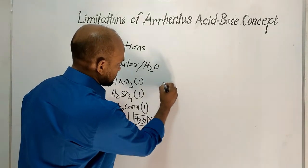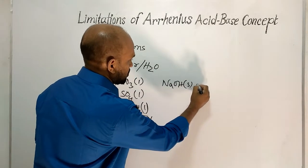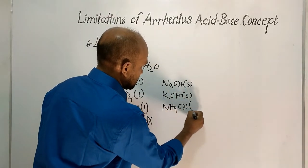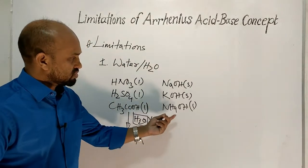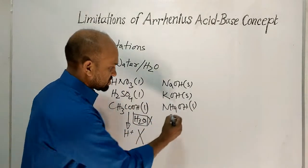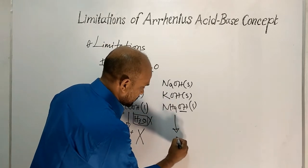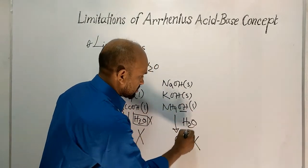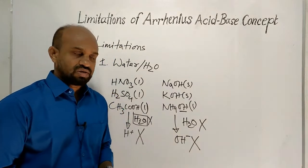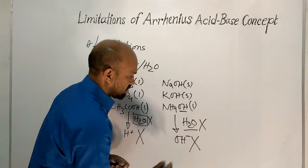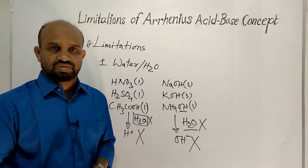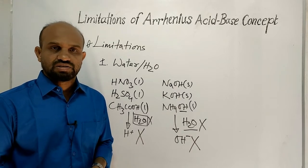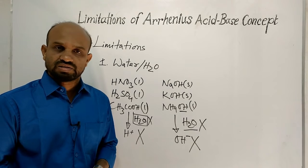Similarly, for Arrhenius bases like sodium hydroxide, potassium hydroxide, and ammonium hydroxide — though these compounds contain hydroxide, in the absence of water they cannot produce hydroxide ions. So water is a very important compound for Arrhenius acids and bases. This is the first limitation: without water, Arrhenius acids and bases cannot function as acids and bases.